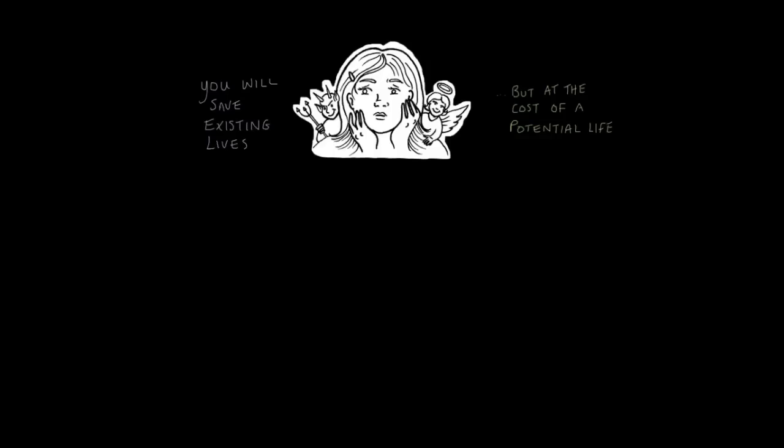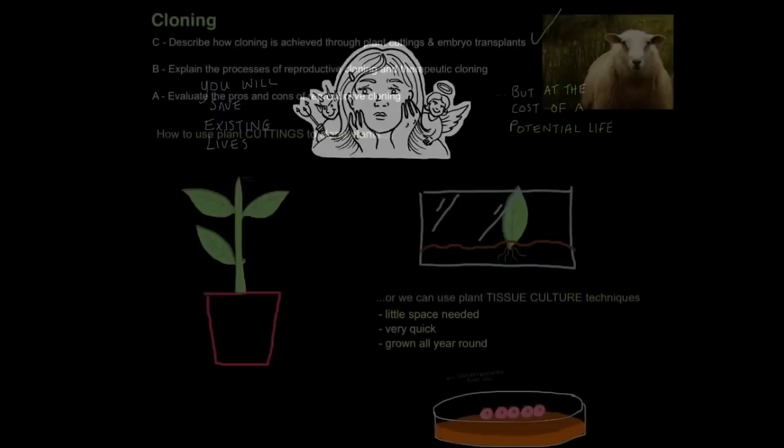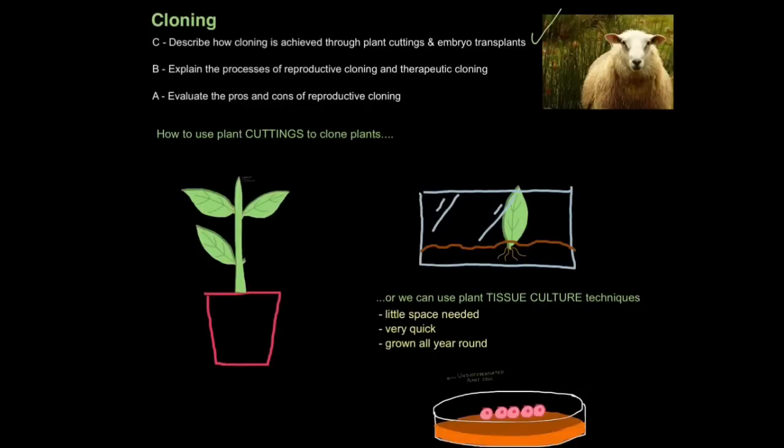However, there are always ethics involved. For example, some people will say you'll be saving existing lives using therapeutic cloning, but others may say, but at the cost of a potential life. Obviously, embryos can develop into newborns, and some people find that difficult to deal with. However, people who are pro-therapeutic cloning will also counter-argue, saying that these embryos come from IVF clinics and most of these get discarded or thrown away. They're never used. The choice, as always, is yours to make. And that is how we explain the processes of reproductive cloning and therapeutic cloning.